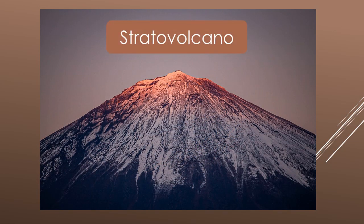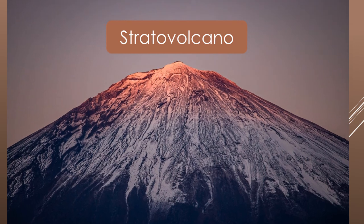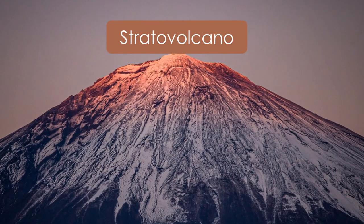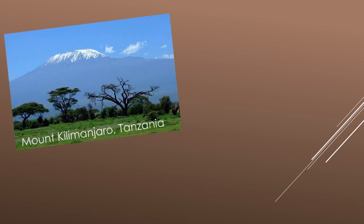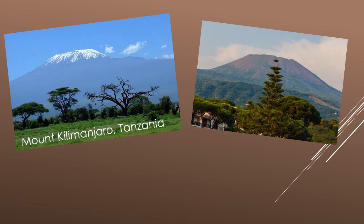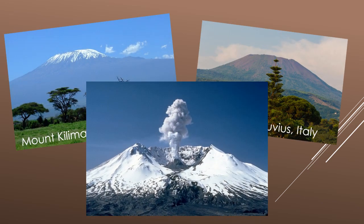Stratovolcanoes are tall and have steep sides built up from volcanic materials including rocks and hardened lava. These volcanoes can be incredibly dangerous as they release toxic gases into the air when they erupt. Some of the world's most well-known volcanoes are stratovolcanoes including Mount Kilimanjaro, Mount Vesuvius and Mount St Helens.